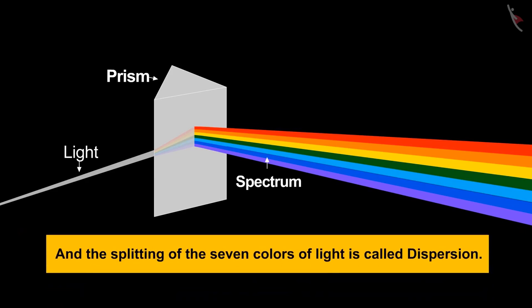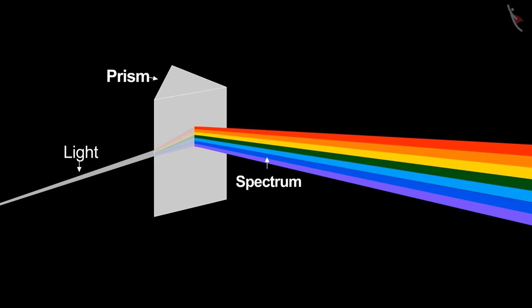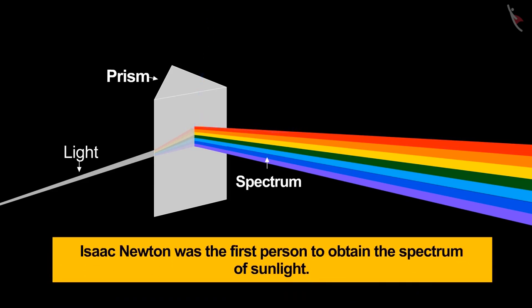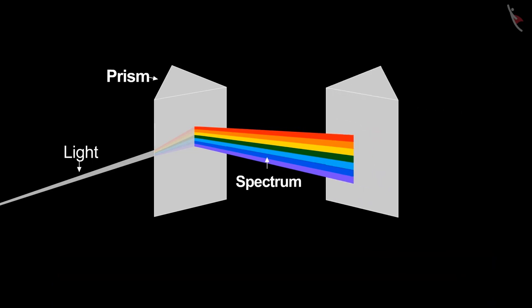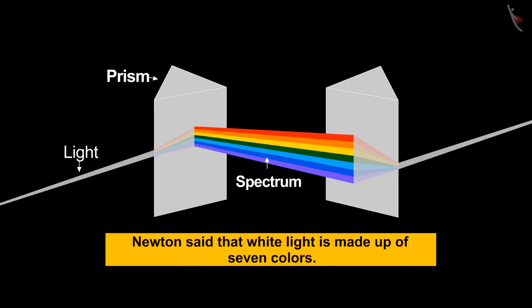The prism refracts light and changes its direction. If you look carefully, each color makes a different angle with the prism and travels on its own path. Isaac Newton was the first person to obtain the spectrum of sunlight. He then used a second inverted prism to recombine the colors into a single beam of white light, proving that white light is made up of seven colors.